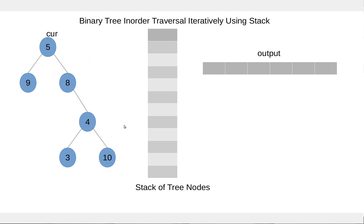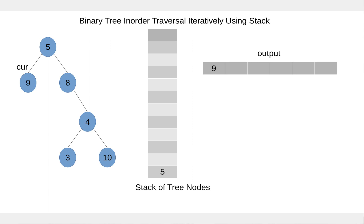Let's see the visualization. Node current is pointing to 5, so that is not null, so we'll add 5 to the stack and move to the left child of 5. Node 9 is not null so we'll add 9 to the stack and move to the left child of 9. Now the left child of 9 is null, so we'll pop the node from the stack, process this node — adding 9 to the output — and move to the right child of 9.